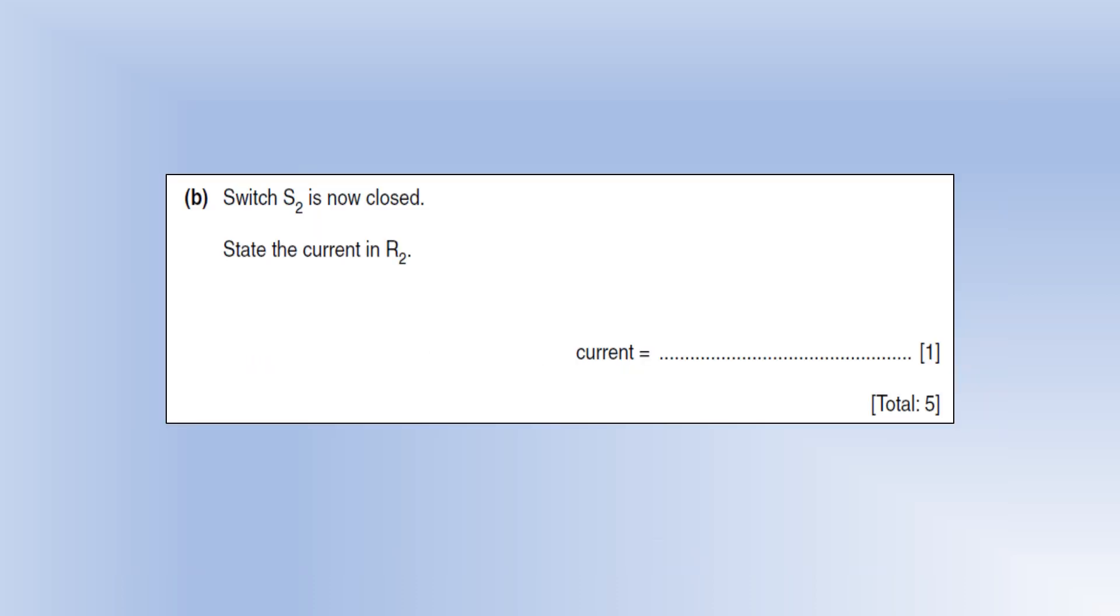If we close S2, current can now go through both R1 and R2. The current through R2, well the potential difference is still the same and the resistance of R2 is 46, so we're going to get exactly the same current through R2 as we had through R1. They've got the same potential difference, same resistance, so they've got to have the same current.